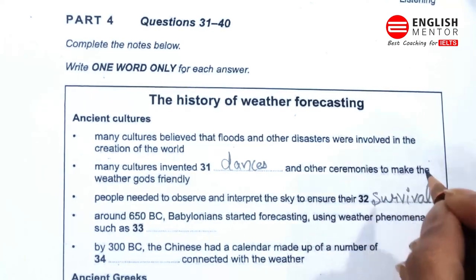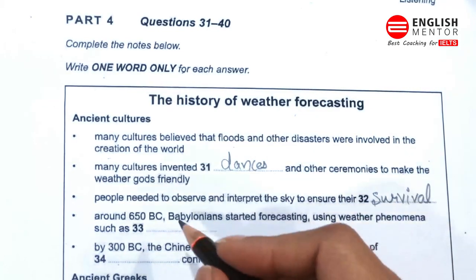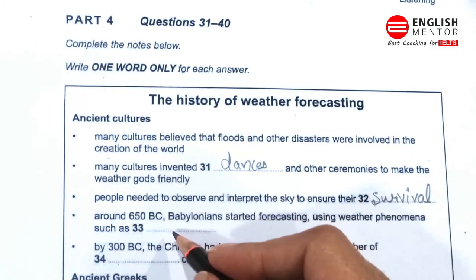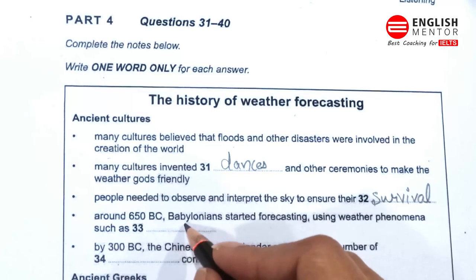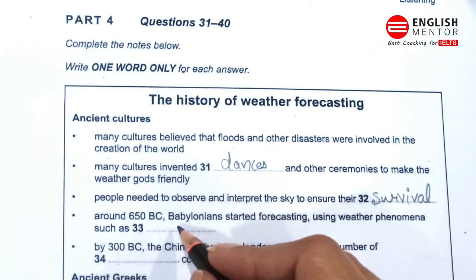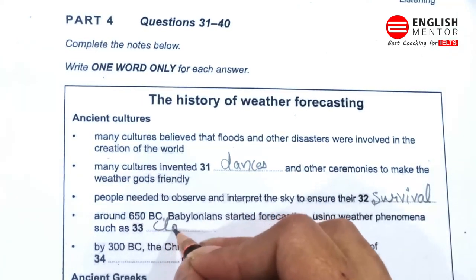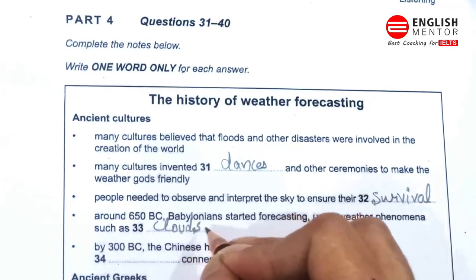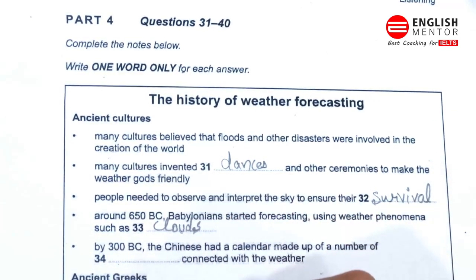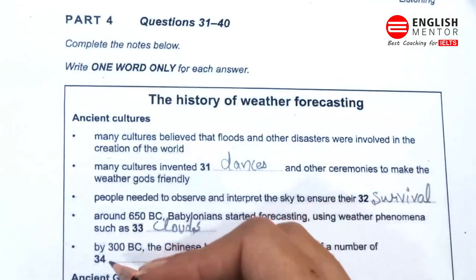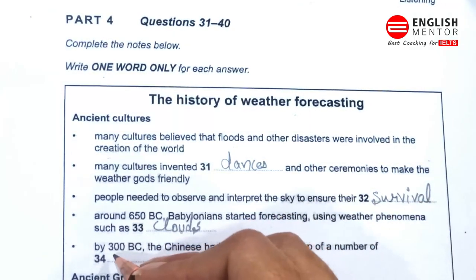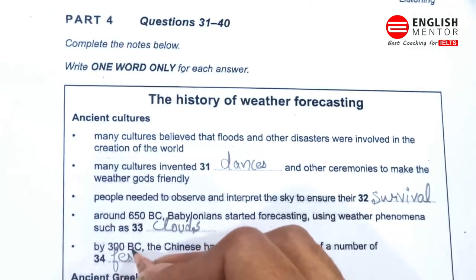It isn't known when people first started to observe the skies, but around 650 BC the Babylonians produced the first short-range weather forecasts based on their observations of clouds and other phenomena. The Chinese also recognized weather patterns, and by 300 BC astronomers had developed a calendar which divided the year into 24 festivals, each associated with a different weather phenomenon.